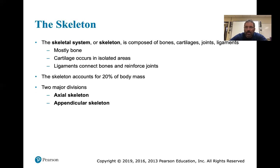Usually there's going to be some instability around that joint or where the bones articulate. The skeleton accounts for 20% of body mass, and remember from last chapter, bones are very metabolically active. There are two major divisions: the axial skeleton and the appendicular - appendages being your arms and legs.